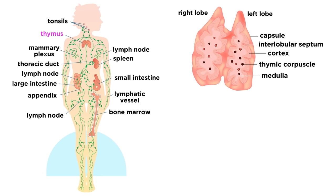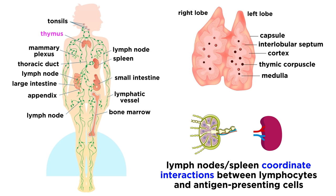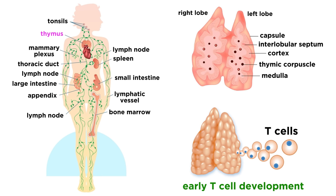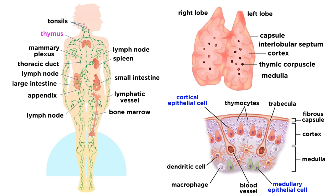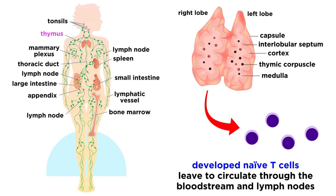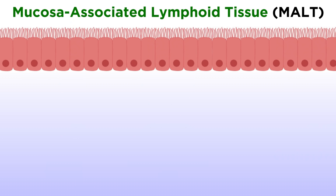Next up, the thymus is another important lymphoid organ. Unlike the lymph nodes and the spleen, which enable immune responses by coordinating interactions between lymphocytes and antigen-presenting cells, the thymus is the site of early T-cell development. In humans, it is positioned right above the heart, and it is the biggest and most active during infancy and childhood. T-cell progenitors migrate from the bone marrow to the thymus, where thymic stromal and epithelial cells guide their development. Like other lymphatic tissues, the thymus has distinct regions called the cortex and the medulla, which correspond to different stages of T-cell development. Less mature cells can be found in the cortex, and more mature cells are in the medulla. Once fully developed, naive T-cells leave the thymus to circulate through the bloodstream and lymph nodes.